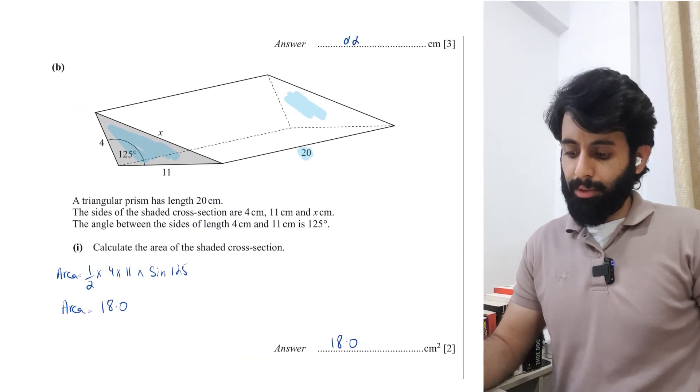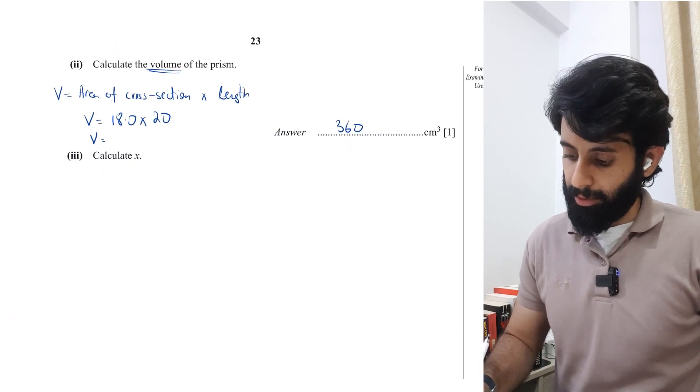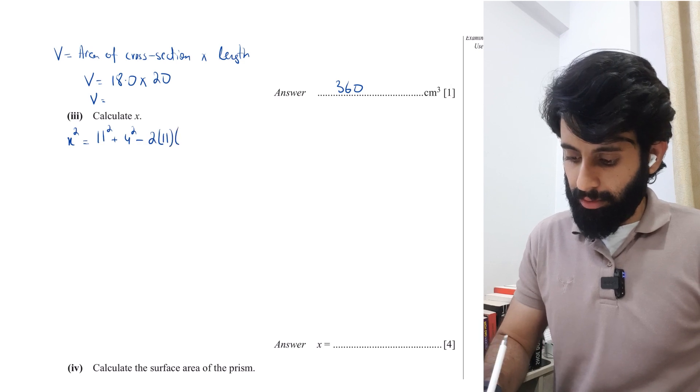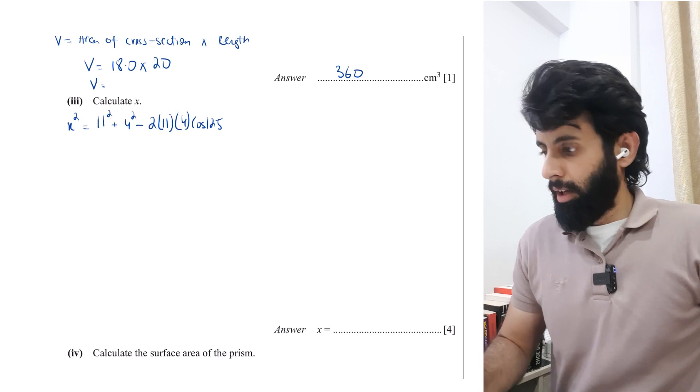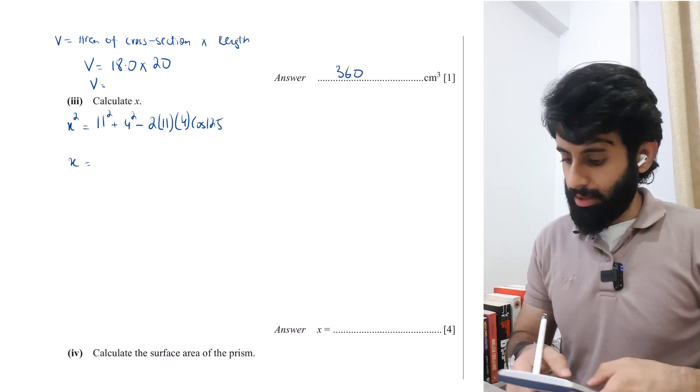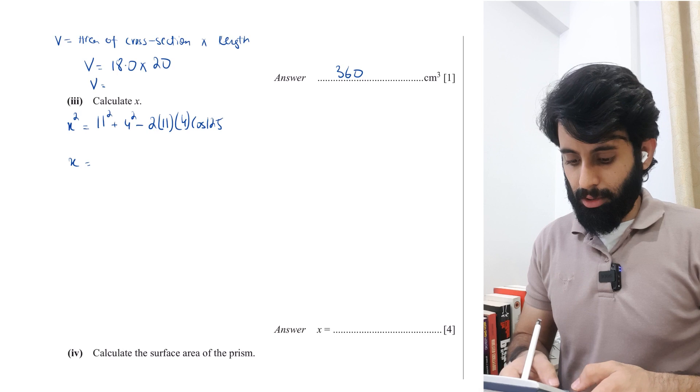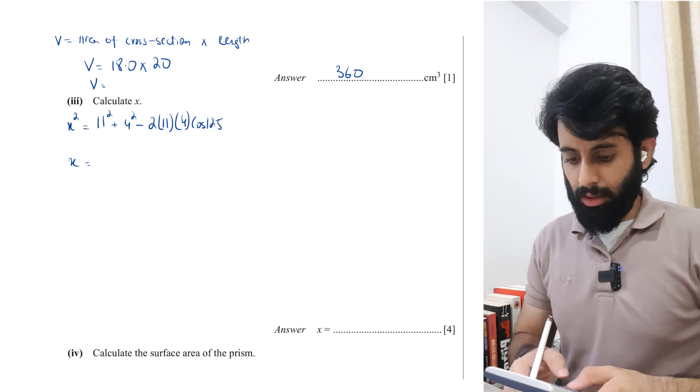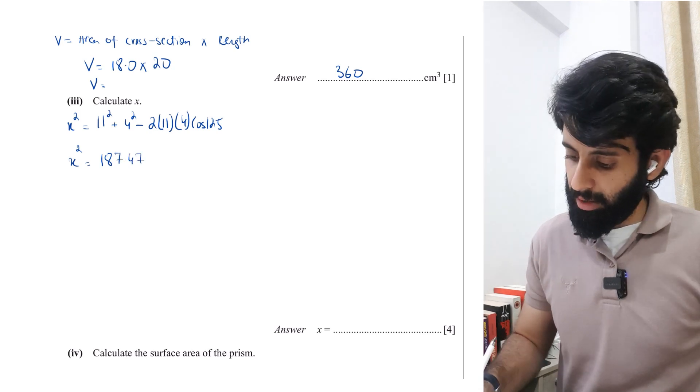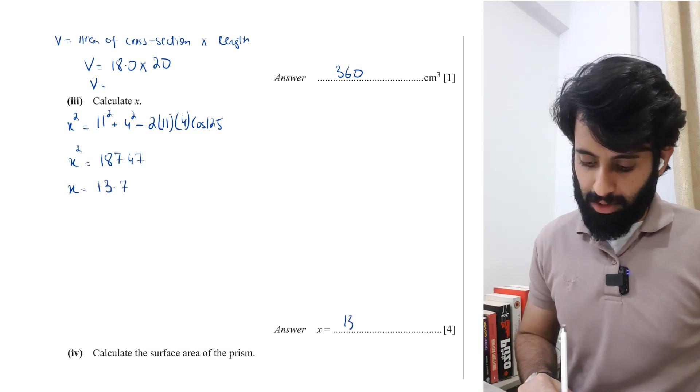Next part is calculate x. For that we have to use the cosine rule. You have two sides and included angle, you need to find the third side. So x² equals 11² plus 4² minus 2 times 11 times 4 times cos 125. Make sure you reset your calculator because if you are an add math student, it's likely your calculator goes into a different mode. Get into the habit of resetting your calculator before attempting a math paper. X² is 187.47 something. To get x, I need to take the square root, so I get 13.69, which I'm going to log at 13.7. So x is 13.7.